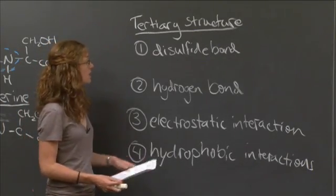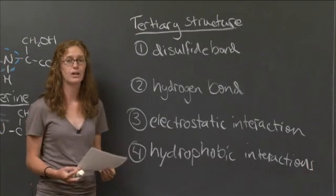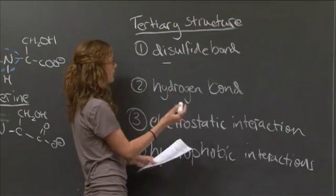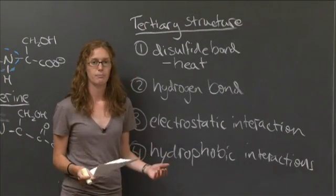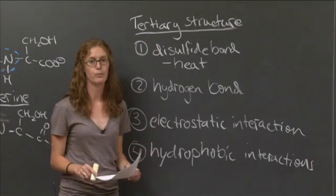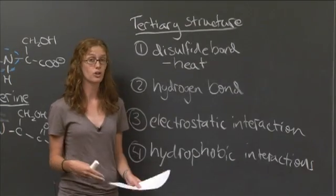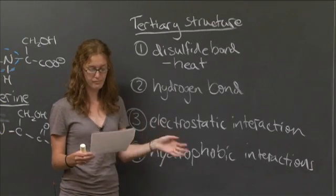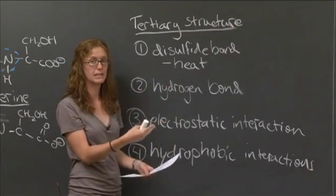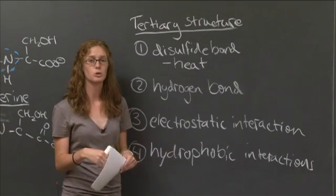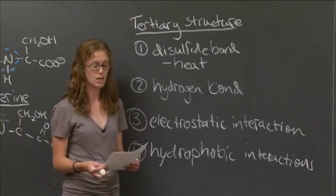So the first one is the disulfide bond. In class, Professor Sadoway talked about how to disrupt the disulfide bond — one of the ways is to apply extreme heat to the protein, and that breaks the disulfide bond. You can straighten out that portion of the protein. This is how you straighten your hair if it's curly. Heating the disulfide bond to extreme heat will cause it to break, and thus the protein will lose that folding or whatever the disulfide bond imparted to that portion of the protein.